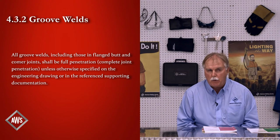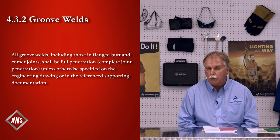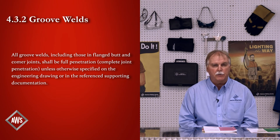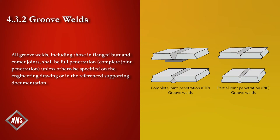4.3.2 on groove welds states that all groove welds shall be full penetration, also known as complete joint penetration or CJP, unless stated otherwise on the engineering drawing or reference supporting document. For example, if partial joint penetration, PJP, is required, it must be clarified on the engineering drawing.